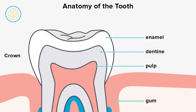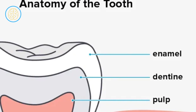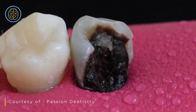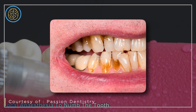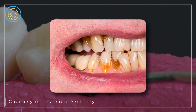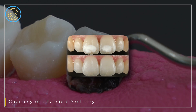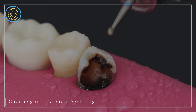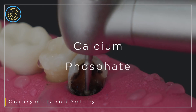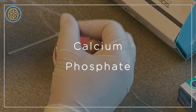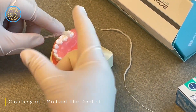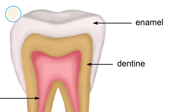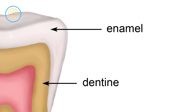The structure of your tooth consists of enamel, the outermost layer, and dentin, the layer beneath it. Enamel is the hardest substance in the human body. However, it's not impervious to damage. When bacteria and acids accumulate on the tooth's surface, they start to attack the enamel, gradually eroding it. Initially, this erosion manifests as small white spots or areas of discoloration on the tooth's surface. Demineralization, where minerals like calcium and phosphate are lost from the enamel due to acids produced by bacteria, exacerbates this process. Dentin is softer and more porous than enamel, making it more susceptible to decay.